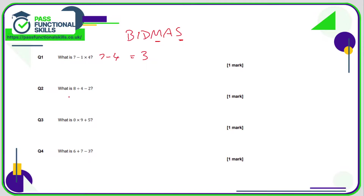In question 2, we have division and subtraction. Division takes place before subtraction, so we do 8 divided by 4 first, which is 2. The question is then 2 take away 2, which is 0.